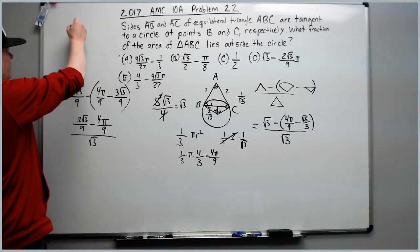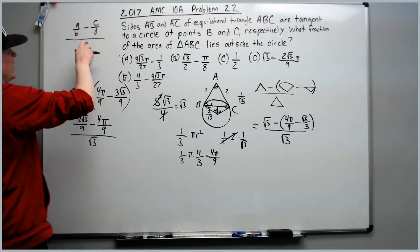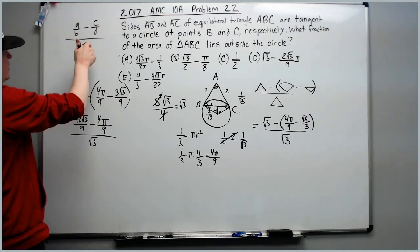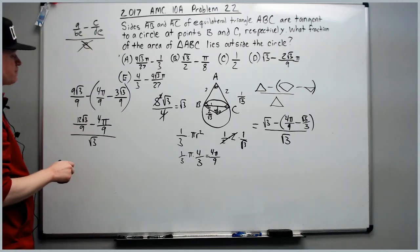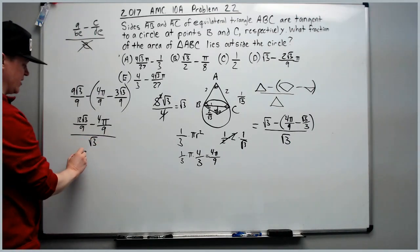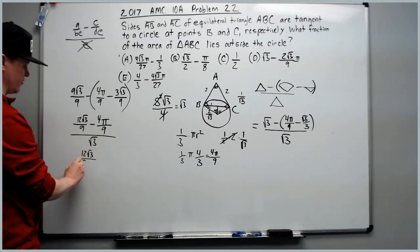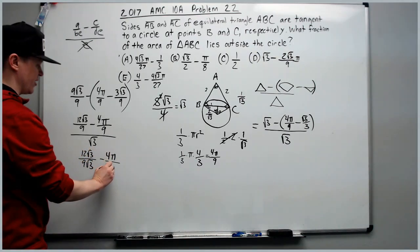If you have a over b minus c over d, and it's all over e, you can just put the e on both of these. So the root 3 is going to get transferred up to the 9s. You get 12 root 3 over 9 root 3 minus 4 pi over 9 root 3.